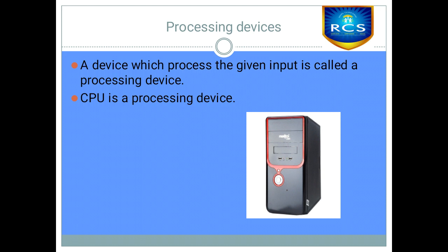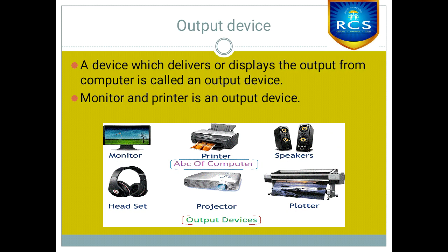The CPU is called the brain of the computer. Children, what is an output device? A device which delivers or displays the output from the computer is called an output device. Some examples: monitor, printer, speaker, headset, projector, etc.